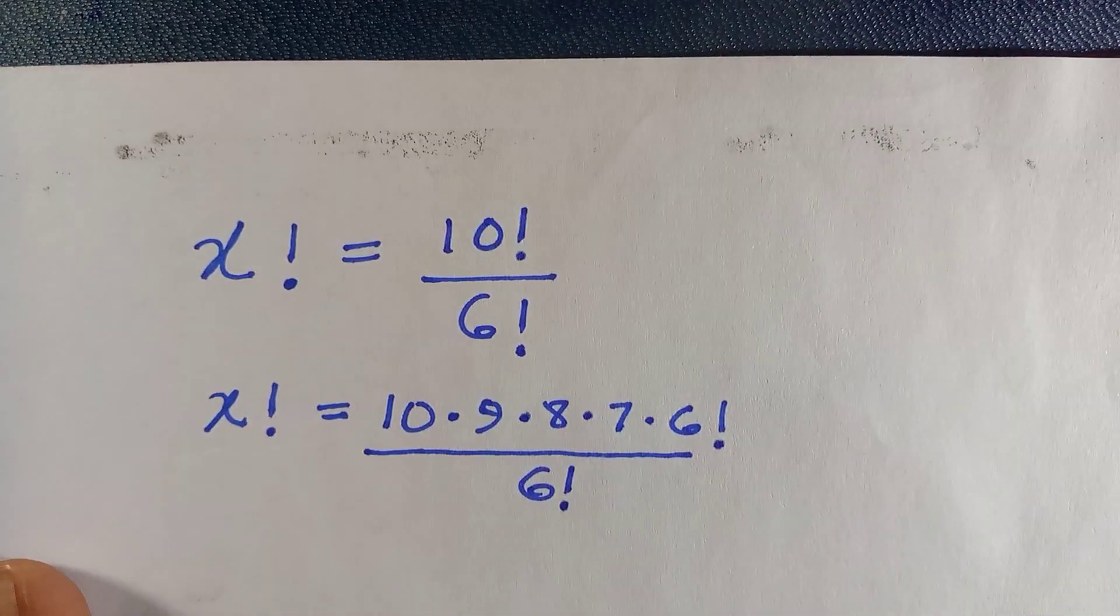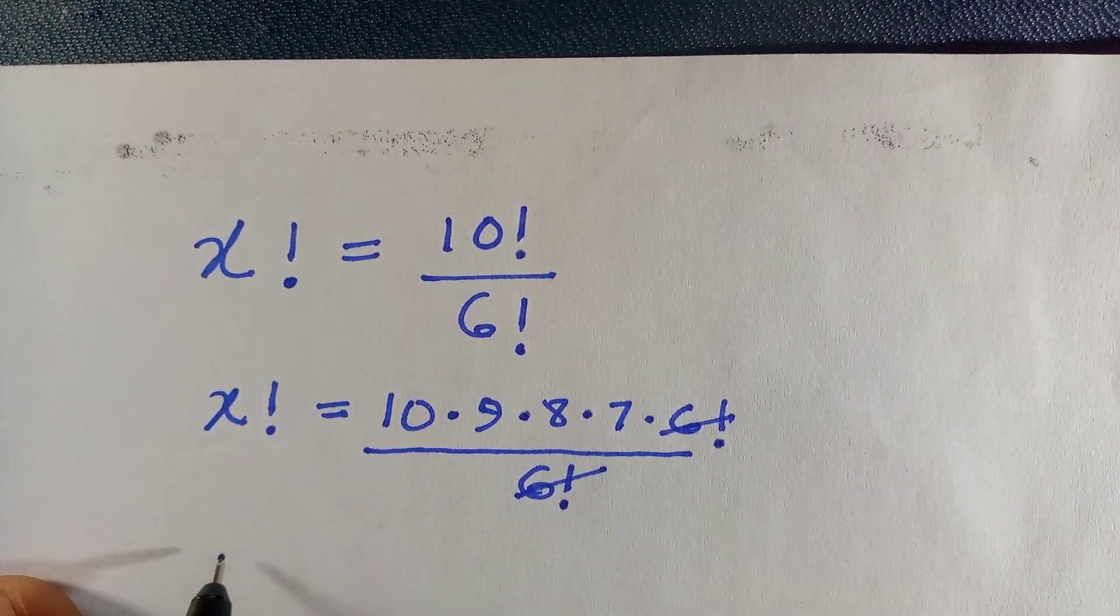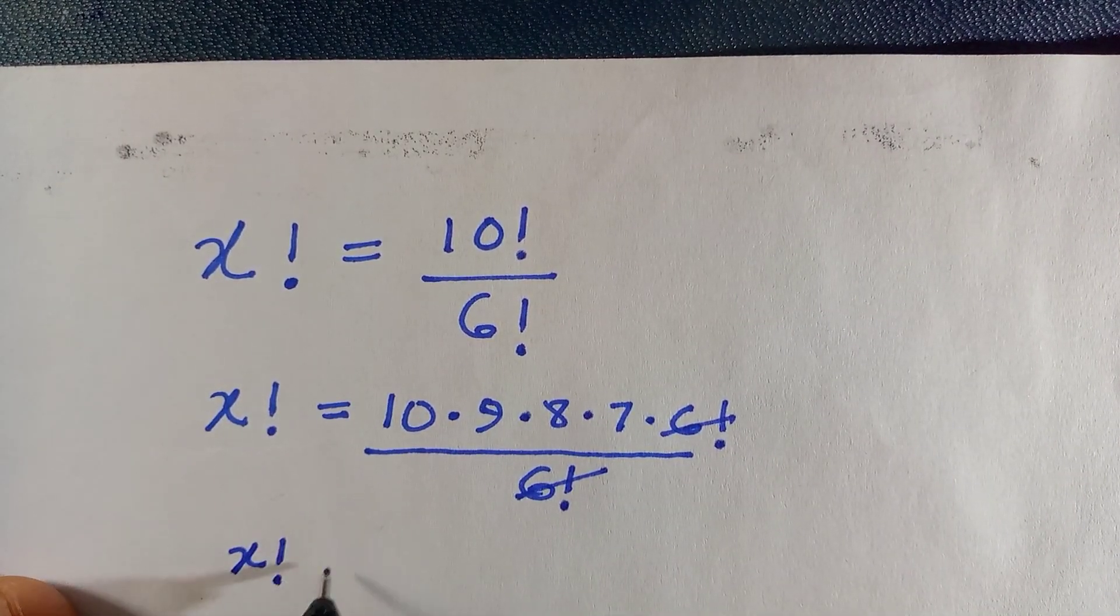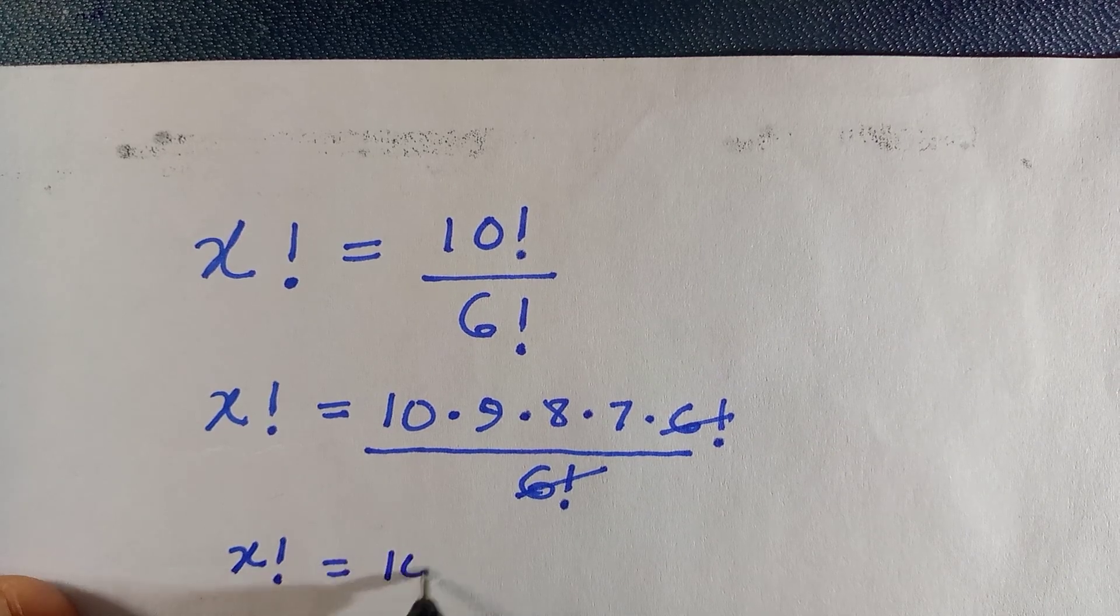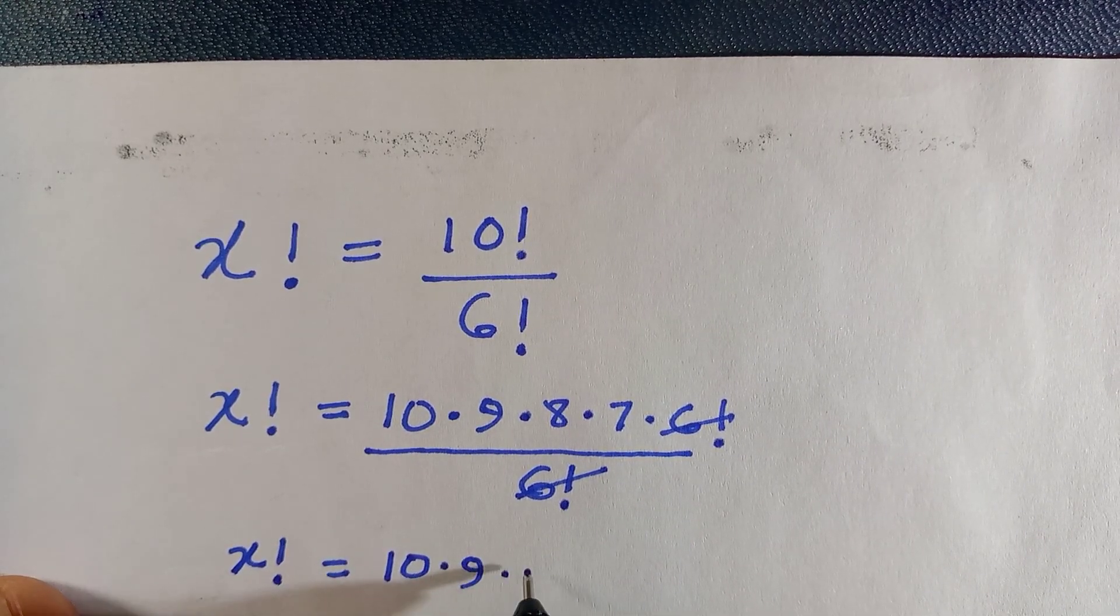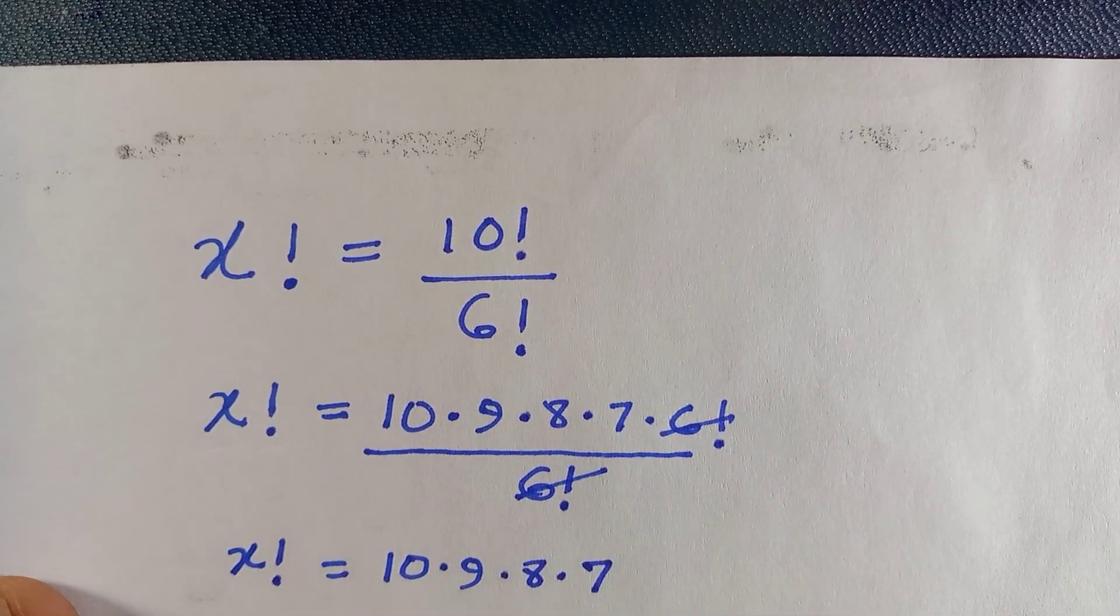Dot here means multiplication. If 6 factorial cancels with factorial, we have x factorial equals to 10 times 9 times 8 times 7.